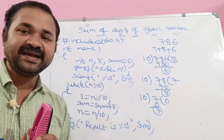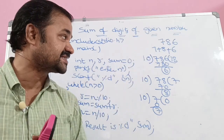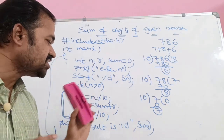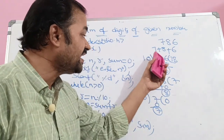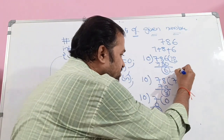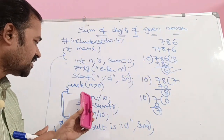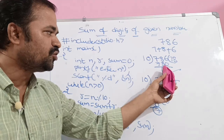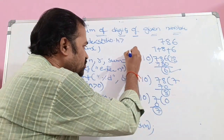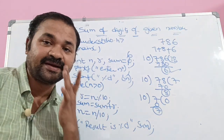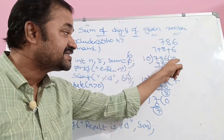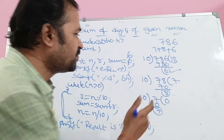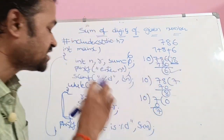Trace: while n greater than 0, n value is 786, which is greater than 0, condition is true, so body will be executed. r = n modulo 10, so 786 modulo 10 gives remainder 6. r = 6. sum = sum + r: initially sum is 0, so 0 plus 6 gives sum = 6. Next, n = n / 10: 786 divided by 10 gives quotient 78, so n = 78.